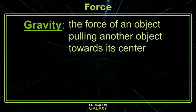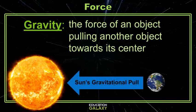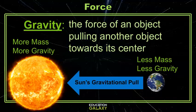There are a lot of different types of force. Gravity is the force of an object pulling another object towards its center. This is like how the Sun pulls the Earth and all of the other planets towards it in an orbit. The larger an object's mass, the more gravity it'll have.